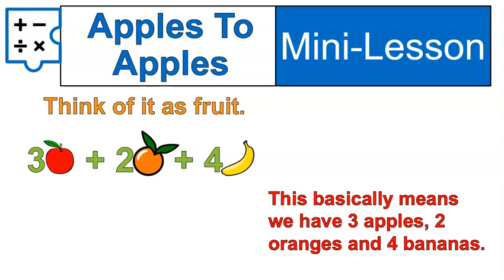Now we can look at it and go, oh, that makes sense. There's 3 apples, 2 oranges, and 4 bananas. That's basically it. That's what like terms are in a nutshell.